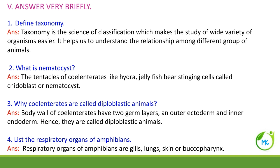Why are Coelenterates called diploblastic animals? The body wall of Coelenterates has two germ layers — an outer ectoderm and an inner endoderm. Since they have only two germ layers, they are referred to as diploblastic animals.